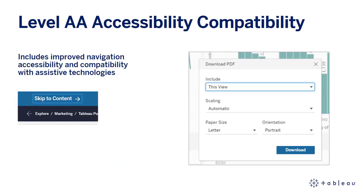To align with governmental accessibility guidelines, we've added a few key improvements, including navigation and keyboard accessibility, compatibility with screen readers and assistive technologies, and new contrast ratios to help reach level AA accessibility.